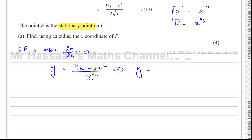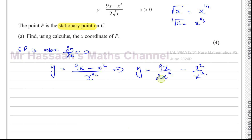To get this ready to differentiate, I'm going to write this as two separate terms rather than one big fraction. I can't just differentiate the numerator and denominator separately — I have to express it as separate terms in x. So I'll write this as 9x over 2x to the power of a half minus x squared over 2x to the power of a half. Be very careful not to forget the two — it's two times root x, which is two times x to the power of a half.